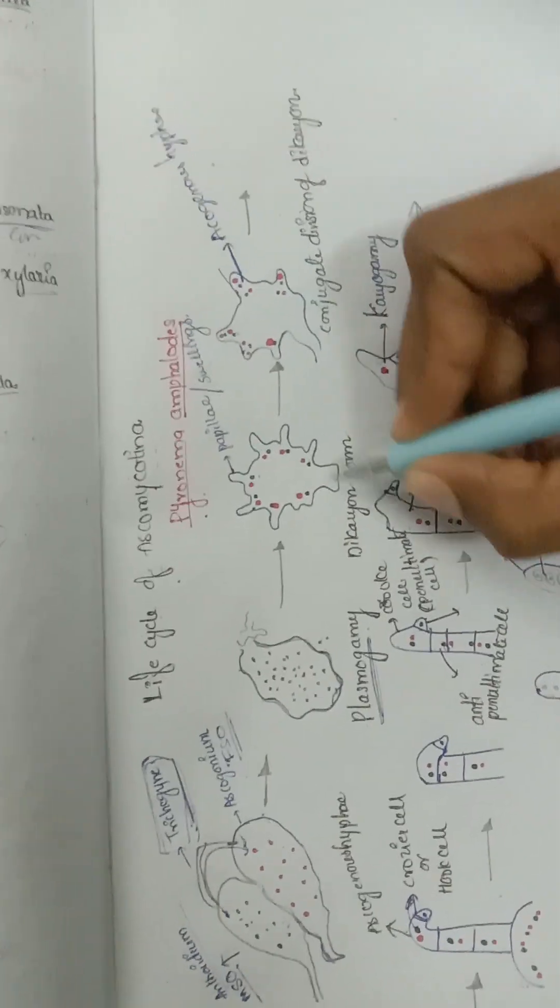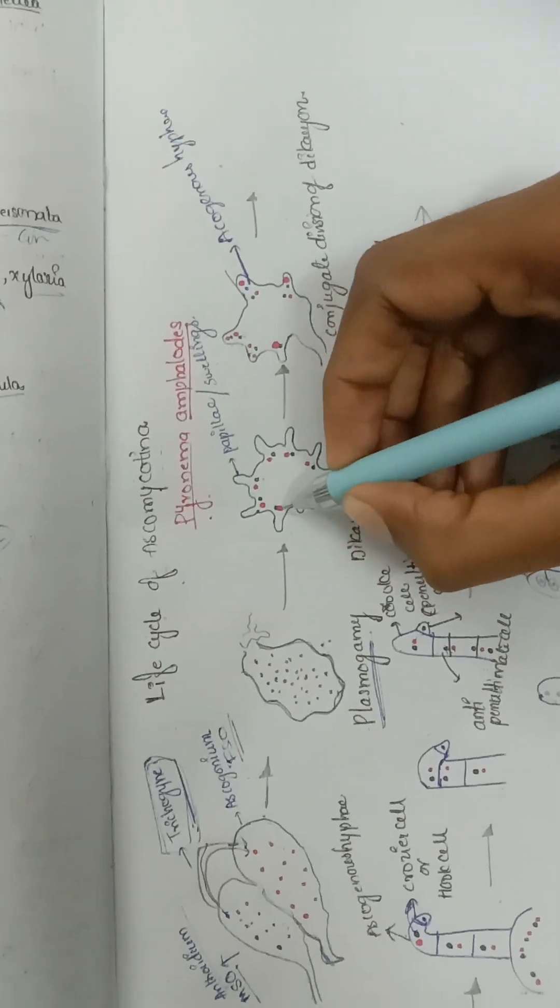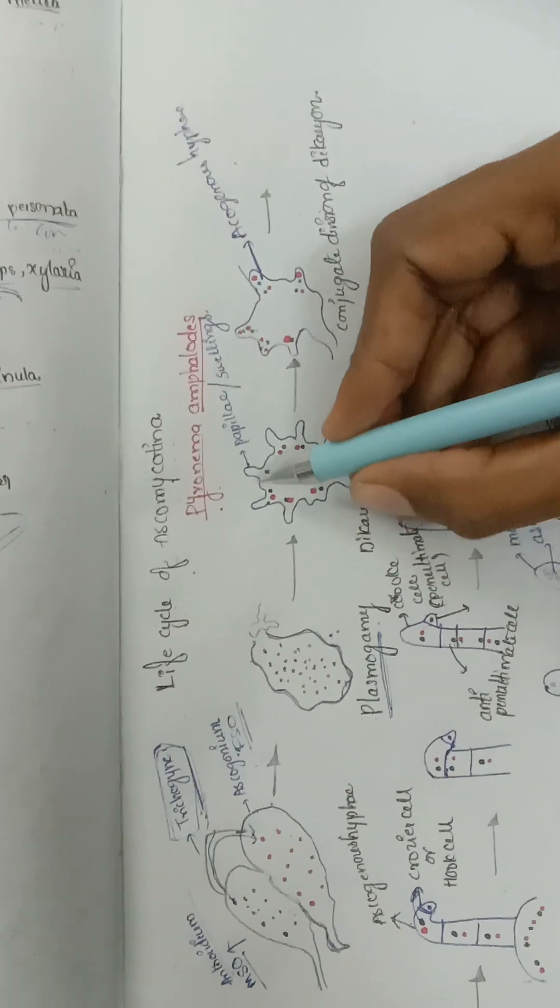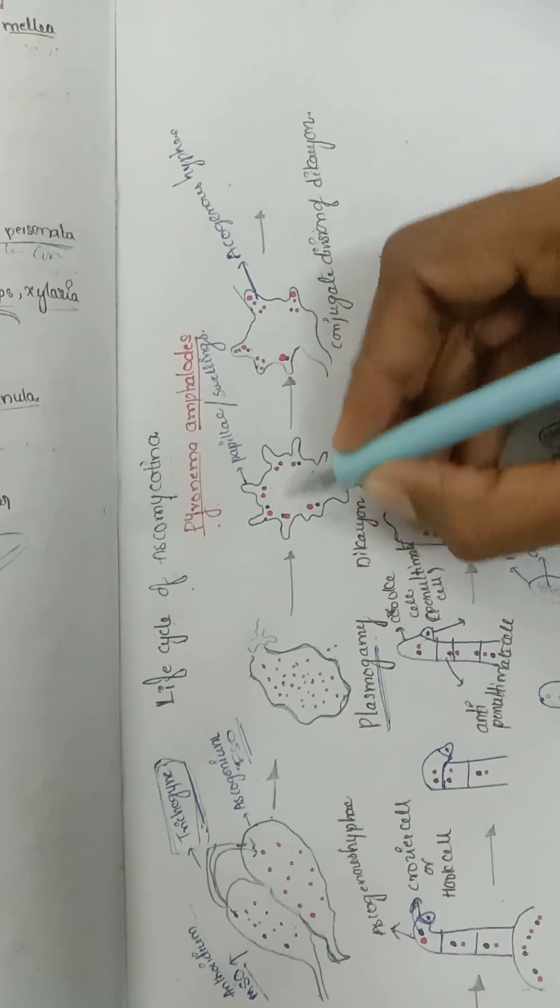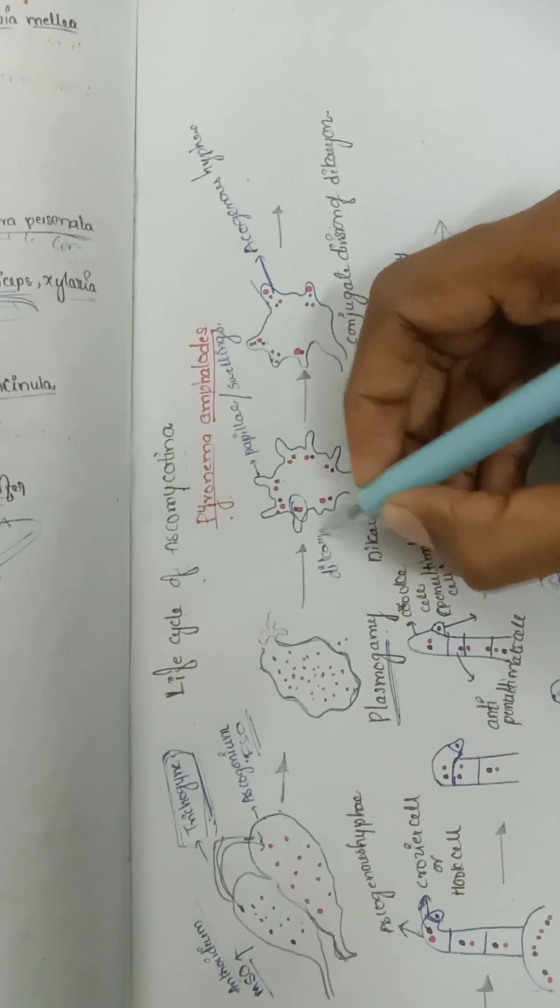Then later, the nuclei—male nuclei and female nuclei—start pairing and result in the formation of a dikaryon. Dikaryon means di equals two, karyon means nucleus.